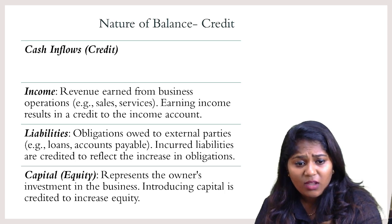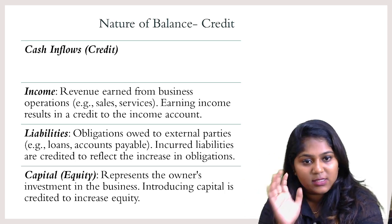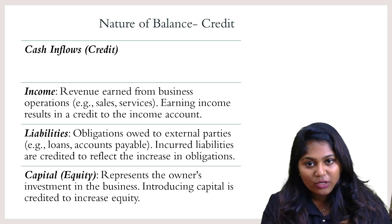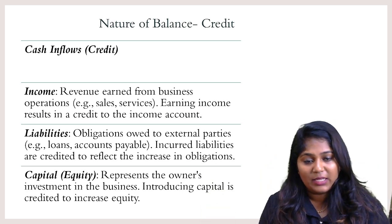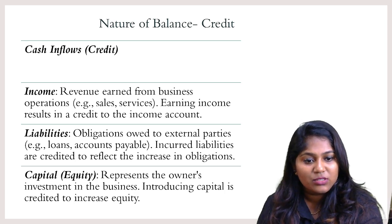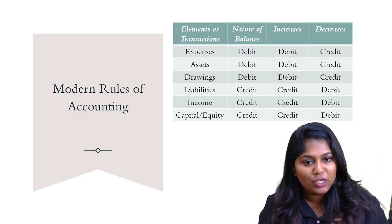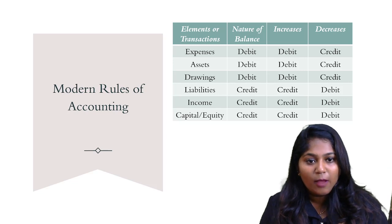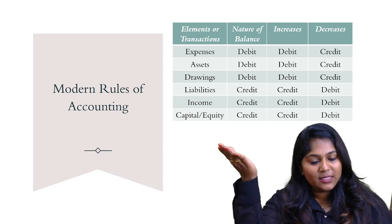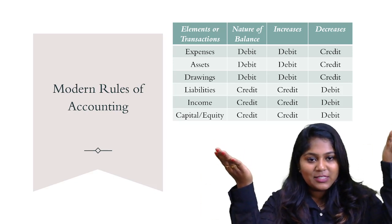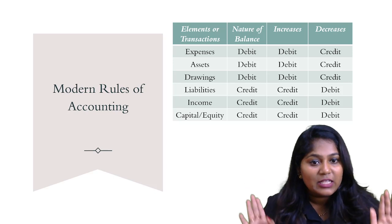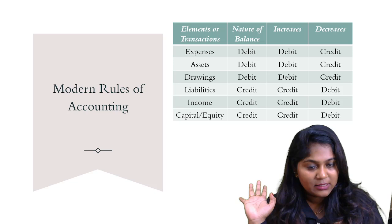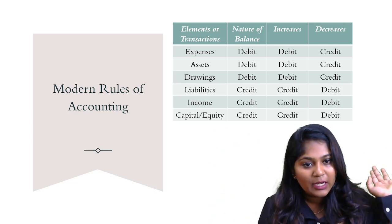Now we know the nature of balances and the six transaction types: three are cash outflows with a debit nature of balance, and three are cash inflows with a credit nature of balance. Expenses, assets, and drawings are debit; liabilities, income, and capital are credit. The modern rules of accounting say: if the element is increasing, copy the nature of balance; if the element is decreasing, do the vice versa. For example, expenses have a debit nature — if rent increases, debit the rent account.